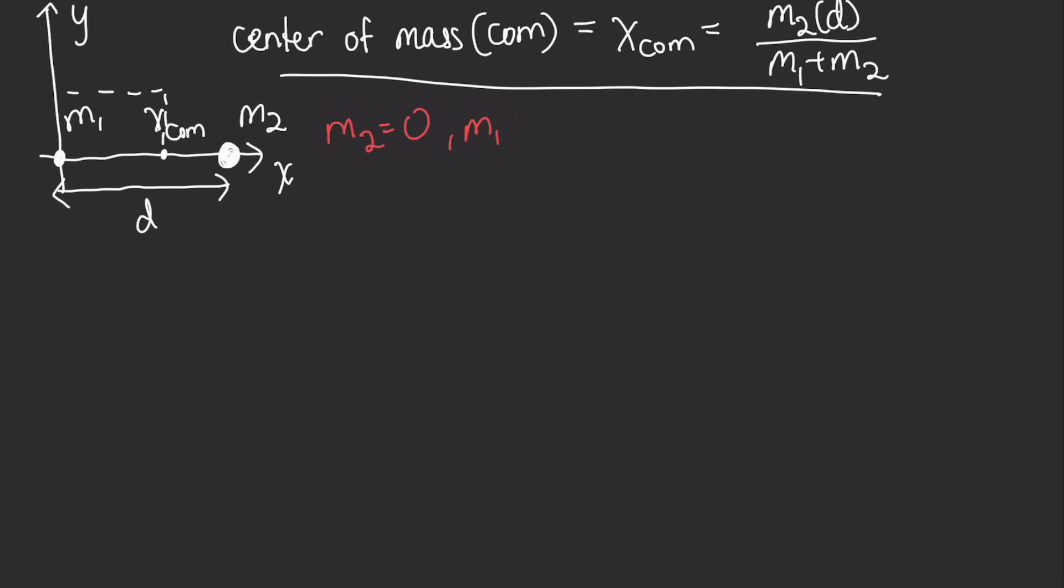So if we look back at the equation, that means that x-center of mass would equal M2 times D divided by M1 plus M2. And since M2 is 0, that just means that the x-center of mass equals 0, which reduces to the situation that we would expect, because the center of mass must lie at the position of M1, which is exactly x equals 0.